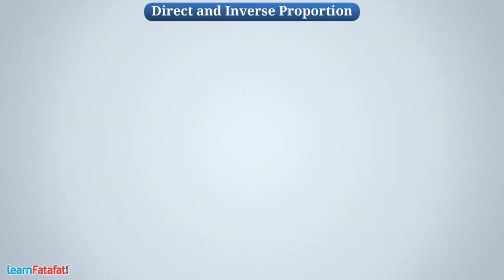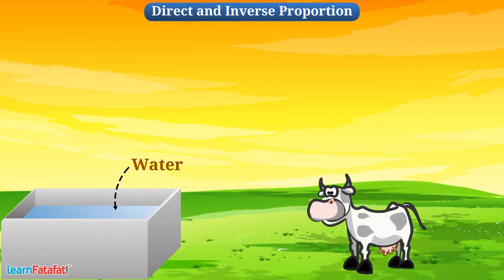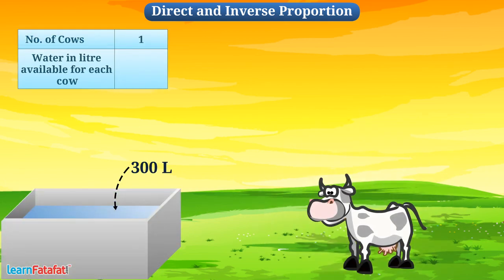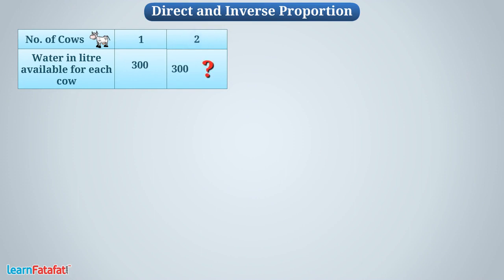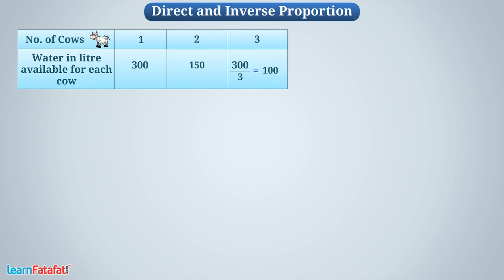Now consider a different situation. Suppose there is a tank in the ground which contains water for the cows. The tank contains a fixed amount of water, say 300 litres. If there is only one cow, then water available for each cow will be 300 litres. Suppose there were two cows — water available for each cow will be half of total water, that is 150 litres. If there are three cows, then water available for each cow will be 300 by 3, that is 100 litres, and so on.